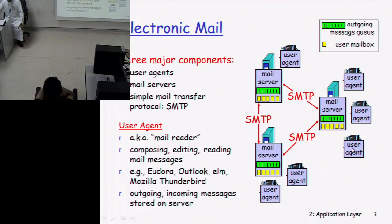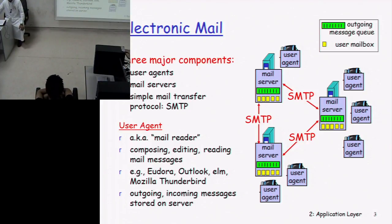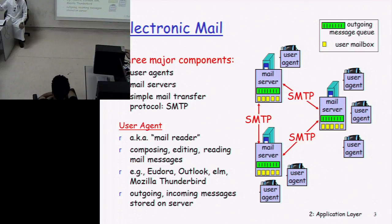The user agent is also known as the mail reader, where you can read, compose, and edit your email. You can write the subject, the recipient email address, and send the email. Examples of mail readers are Fedora, Outlook, Elm, and Mozilla Thunderbird. Most commonly we use Outlook Express on our computers, where we can compose, send, and retrieve our emails from our mail servers.